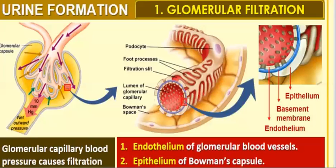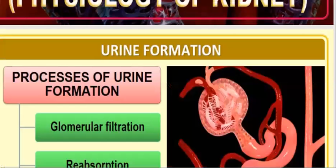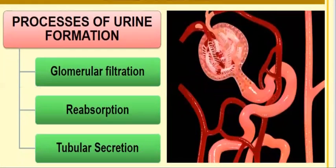Hello students, welcome back to Easy Biology Tutorials. Now we are going to start with urine formation. In urine formation, there are basically three steps: the first step is glomerular filtration, the next step is reabsorption, and the third step is tubular secretion.